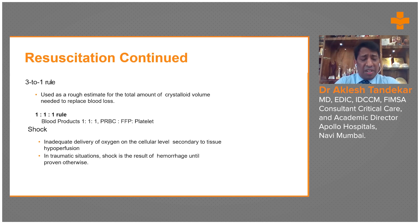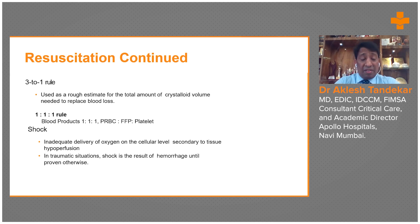When giving blood transfusions, packed red blood cells are used nowadays, which do not contain coagulation factors or platelets. Therefore, when replacing blood with one unit of PRBC, one bag of FFP and one bag of platelets should also be given. Otherwise, there will be platelet and coagulation factor deficiency. The one-to-one-to-one rule is advocated for blood transfusion.